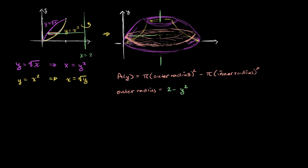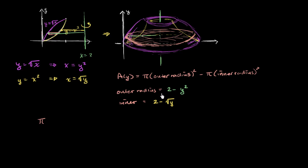The inner radius is the horizontal distance between the vertical line x equals 2 and our inner boundary. That x value as a function of y is square root of y, so the inner radius is 2 minus square root of y.